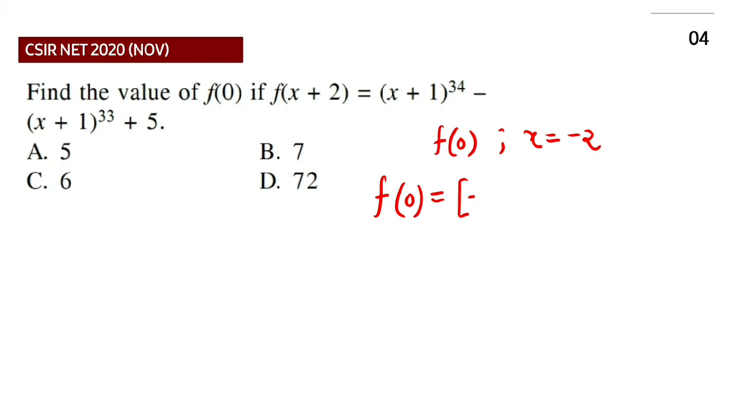So here you have -2+1 and the power is 34. Similarly we are having -2+1 and this power is 33 and plus 5. So here you have (-1)^34, this is even power so it will give you plus 1. And here we are having (-1)^33.